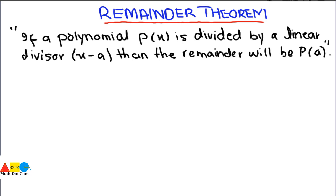The Remainder Theorem, as its name indicates, is a theorem applicable while dividing polynomials. It is stated as: if a polynomial p(x) is divided by a linear divisor x minus a, then the remainder will be p(a). You need not be confused with this statement as it seems a little bit difficult, but you will understand its concept when we describe it through examples.